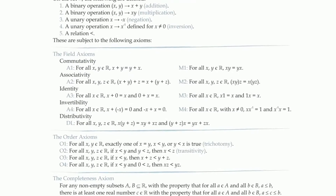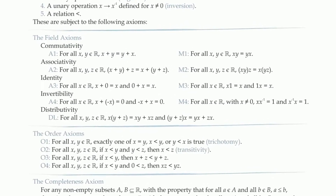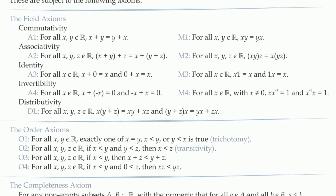Looking through the axioms of the real numbers, we notice that while everything in the list of axioms is true, it's not at all an exhaustive list of everything we know about the real numbers. Certainly we know a lot more, but the axioms are the only properties that are true by definition — the only ones we can take for granted. Everything else we will have to prove.